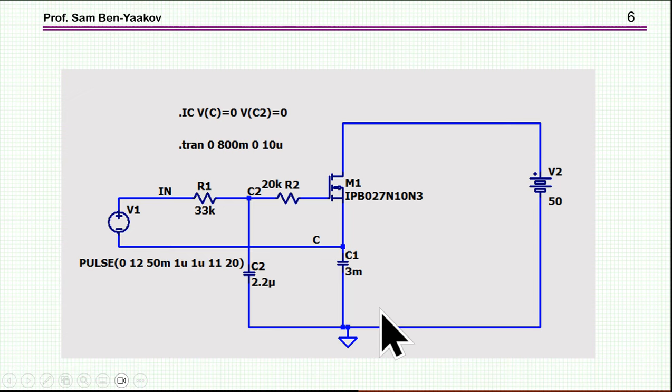So let's have a look now, by simulation, how this circuit works. We have the transistor. This is the same transistor I've shown in the datasheet there. And this is the capacitor to be charged, 3 millifarad. This is the auxiliary capacitor. And we have here a source, which is like a step turning on the system. And current starts to flow, flowing here and here. And this capacitor will be charged.